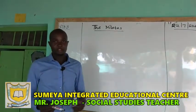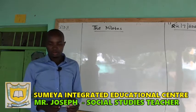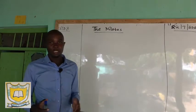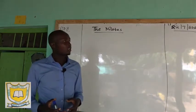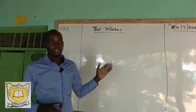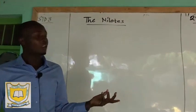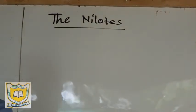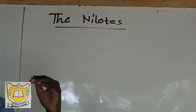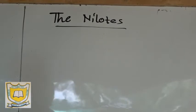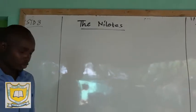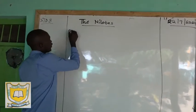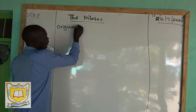Good morning everybody, welcome for a lesson today. We are continuing with the People and Population topic. Last time we looked at the Bantu — their original homeland and main economic activity. Today we are going to look at the Nilots, specifically the origin of the Nilots in Kenya. Next time we shall move to Eastern Africa, and after that we shall look at Africa in general.